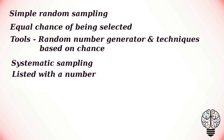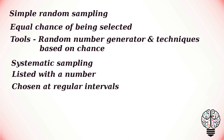The next type is systematic sampling, which is similar to simple random sampling but usually slightly easier to conduct. Every member of the population is listed with a number, but instead of randomly generating numbers, individuals are chosen at regular intervals. For example, all employees in a company are listed in alphabetical order. From the first 10 numbers, you randomly select a starting point — let us fix it as 6. From number 6 onwards, every 10th person is selected: 6, 16, 26, 36, and so on, giving you a sample of 100 people from a company of 1,000 employees. It is important to make sure there is no hidden pattern in the list that might skew the sample.